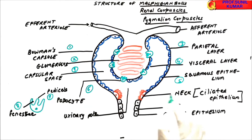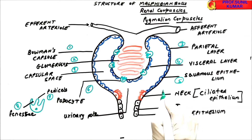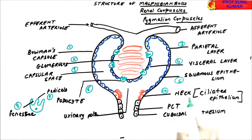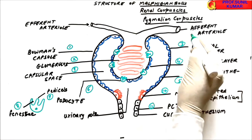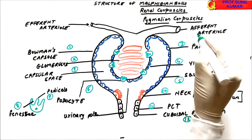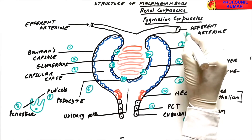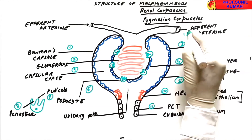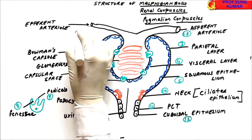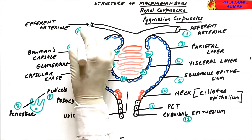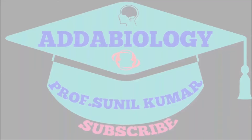The neck is made up of ciliated epithelium, whereas the PCT — proximal convoluted tubule — is made up of cuboidal epithelium. The afferent arteriole has a bigger diameter, which brings the blood towards the glomerulus, and the efferent arteriole is smaller in diameter, which takes the blood away from the glomerulus. I hope you have understood the Malpighian body.